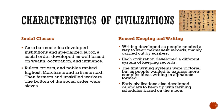Writing developed as people needed a way to keep permanent records, mainly carried out by scribes. Each civilization developed a different system for keeping records, which is how we ended up with so many different languages and alphabets. The first writing systems were pictorial, meaning they were pictures — kind of like hieroglyphics. But as people wanted to express more complex ideas, alphabets formed, especially with the Phoenicians, because of trade. Early civilizations also developed calendars to help keep up with farming schedules.